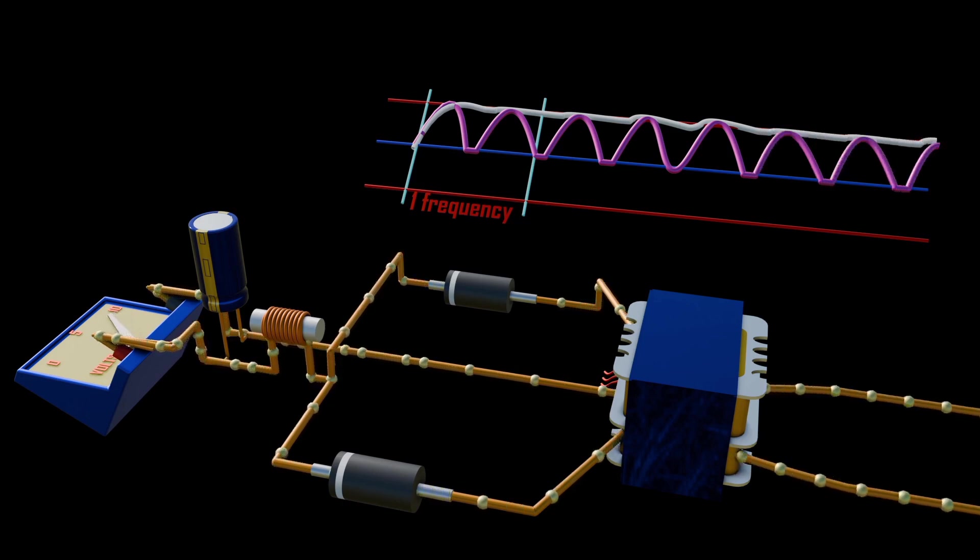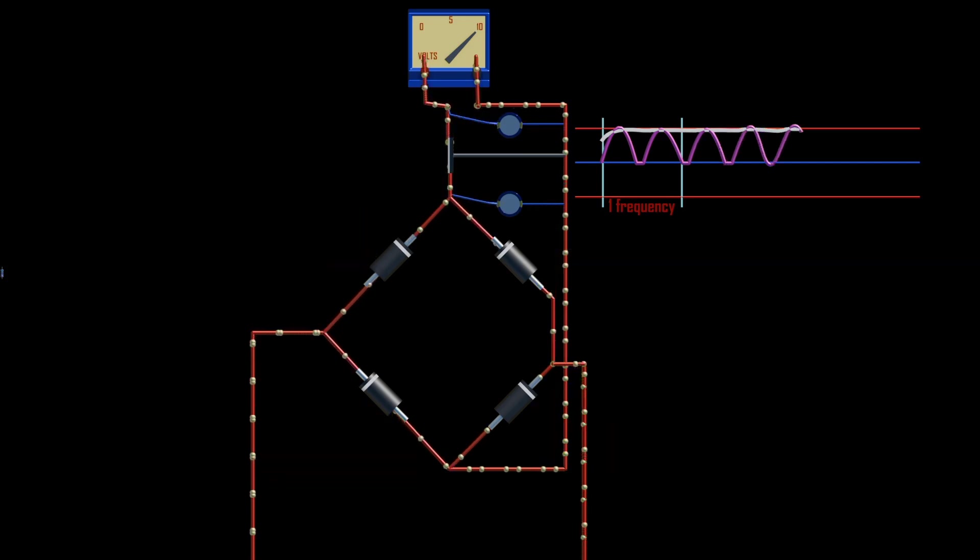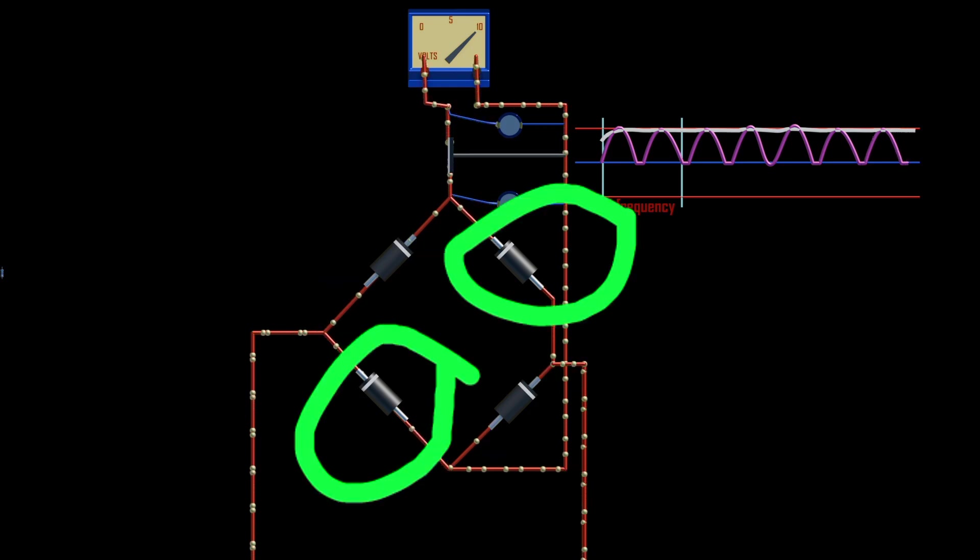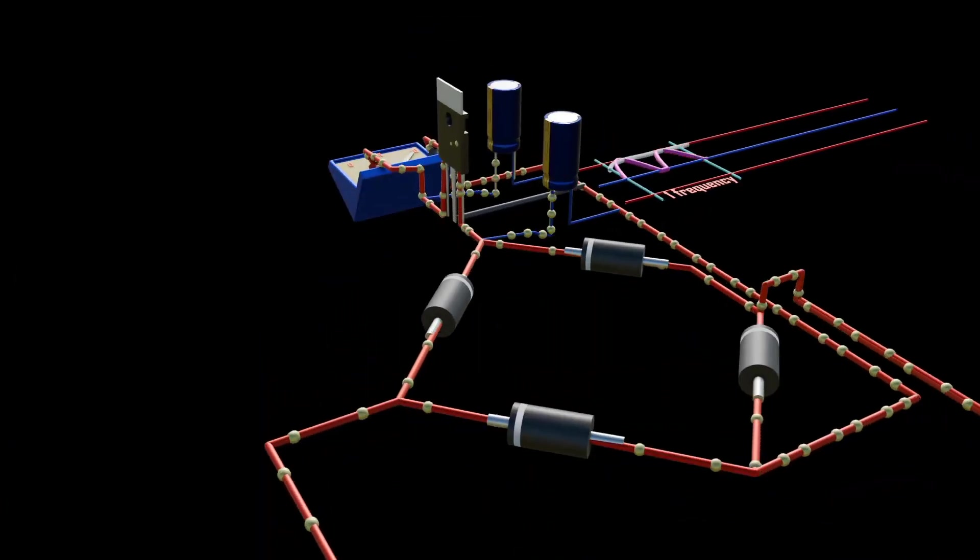But instead of using a transformer in our circuit, we can use four diodes connected in a bridge way. As we can see two diodes conduct current once, while the other diodes block. This type of circuit is called bridge rectifier circuit.